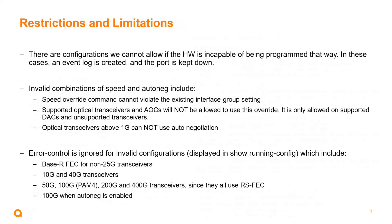Looking at some of the restrictions and limitations, there are configurations that cannot be allowed if the hardware is incapable of being programmed that way. In these cases, an event log will be created and the port will be kept down. Invalid combinations of speed and auto negotiation include cases where the speed override command cannot violate the existing interface group setting. Supported optical transceivers and AOCs will not be allowed to use this override — it's only allowed on supported DACs and unsupported transceivers.